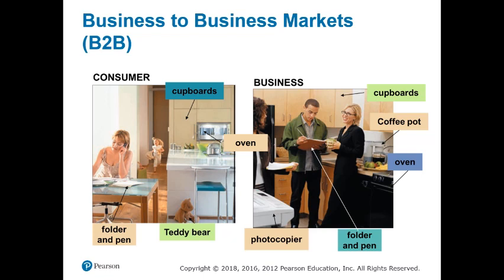That part of the chapter focused on individual consumers — for example, you as an individual buyer deciding to purchase something for yourself. Now there is another side of business marketing which deals with selling to organizations, selling to other businesses and enterprises, not the final consumers. Many businesses' major activity is oriented towards other organizations.